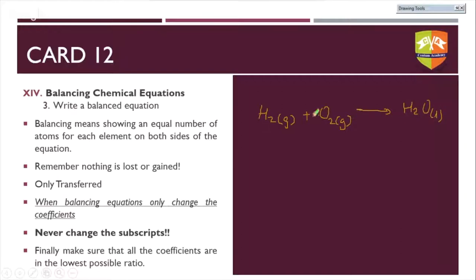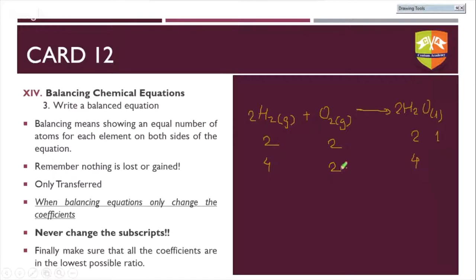Put a coefficient of 2 before H₂O so oxygens are balanced, but that makes hydrogen four on the product side. To balance hydrogen on the reactant side, multiply H₂ by 2 as well, making hydrogen four atoms on both sides. Now we have: 2H₂ + O₂ → 2H₂O, with four, two, four, two atoms all balanced.